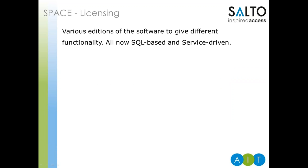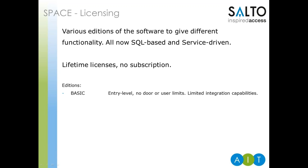Salto has changed the licensing model to give more options to the software rather than restricting numbers of doors or users. All software is now SQL-based and service-driven, meaning it can be installed once and left to run in the background. Licenses are a one-off purchase and don't require an annual subscription or renewal. There are now six core software editions, each adding more functionality over the last. BASIC offers the least functionality but is a good starting point for a small organisation, though card management is quite manual — no automatic card assignment, so you have to print a card for each user, look up their record, and encode their card independently.